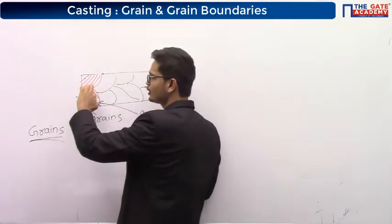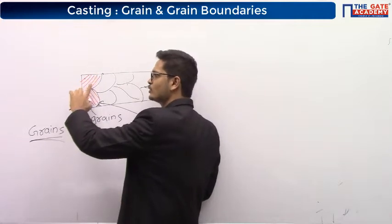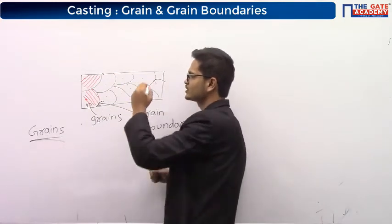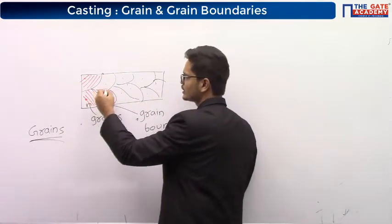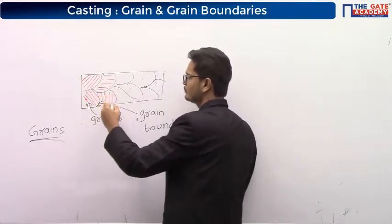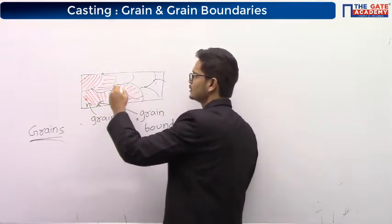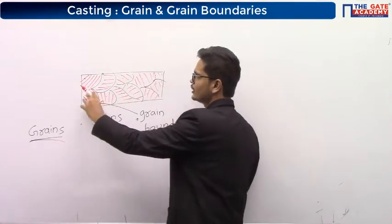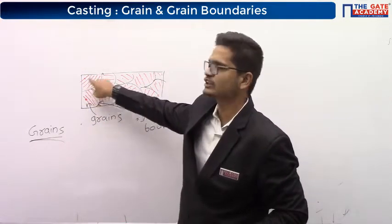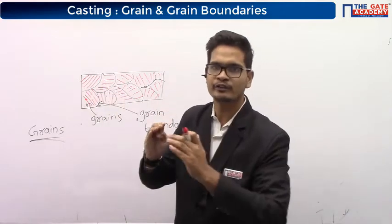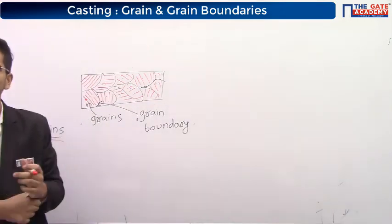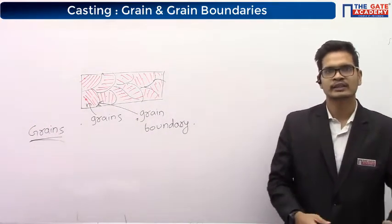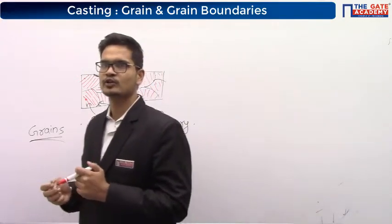This crystal is grown, so now it won't permit the other crystal to grow. Similarly, at all the points the solidification had started, and at all the points the crystals were formed in some order. Each fully grown crystal will appear like a grain. These are called as grains, and the boundary between two fully grown crystals is called as a grain boundary.